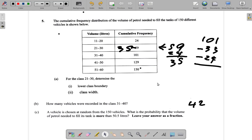So you have to be careful here. It says how many vehicles were recorded in the class 31 to 40. Don't just look at it and say it's 101. That's a cumulative frequency. 101 is a cumulative frequency. They are not asking you for the cumulative frequency, they were asking you how many were recorded.